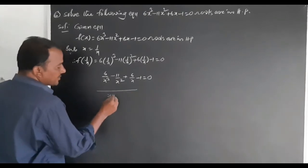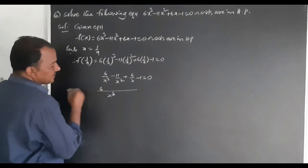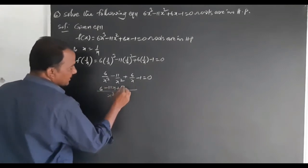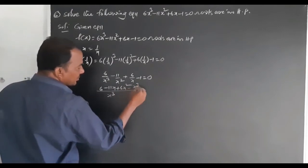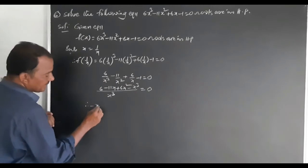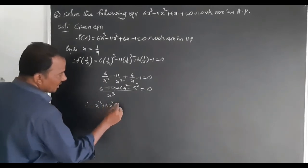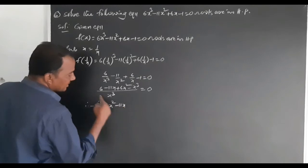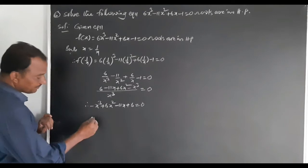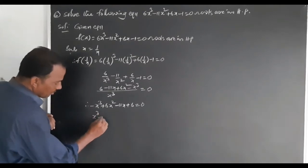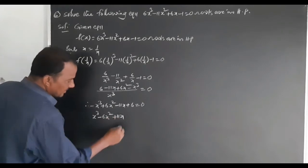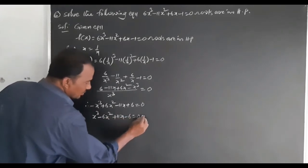Taking LCM as x cube: 6 minus 11x plus 6x square minus x cube equals 0. By cross multiplication: minus x cube plus 6x square minus 11x plus 6 equals 0.